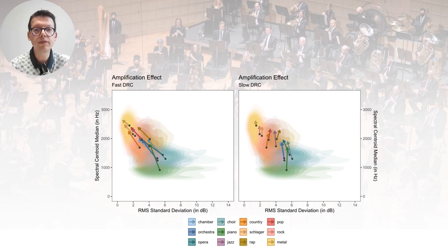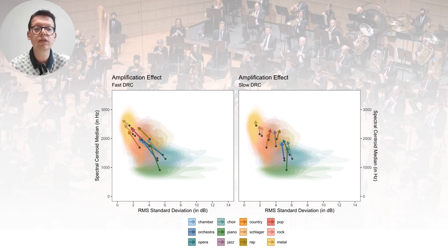The effect of amplification by genre is shown here with the arrows. This illustration highlights the interaction between dynamic range compression settings and music genre.